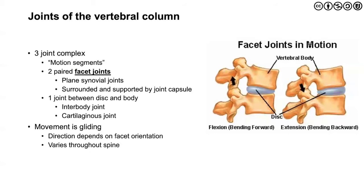There really are three joint complexes in the vertebral column: paired facet joints — both right and left superior, right and left inferior facets — as well as a joint between the disc and the body. While the facet joints are referred to as plane-type synovial joints with a joint capsule, the joint between the body is really what we would refer to as an interbody joint — it's cartilaginous, made up of the intervertebral disc. The movement here is really a gliding movement. The direction depends upon the orientation of the facet, which in the lumbar spine is 90 degrees.